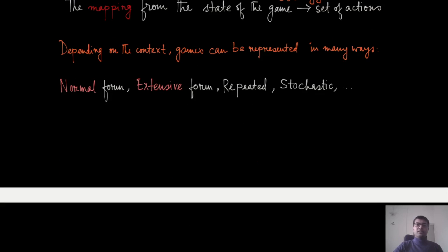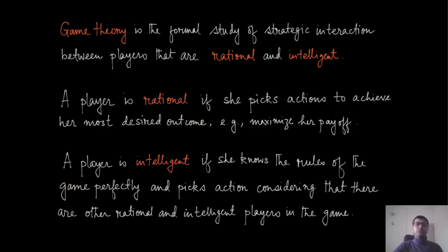Depending on the context, games can be represented in many ways. It can be represented in normal form, in extensive form, and there are repeated games or stochastic games. Even though we will be discussing only the first two—normal form and extensive form games—in this course, game theory also comes with certain assumptions. Since we are going to do a formal study, we are going to assume the models of the players. We are going to assume that these players are rational and intelligent.